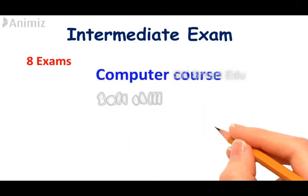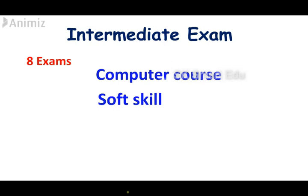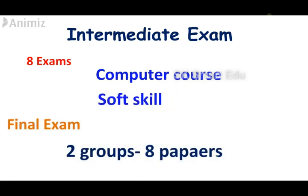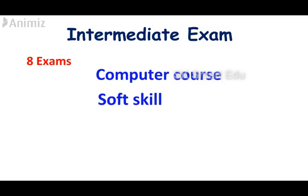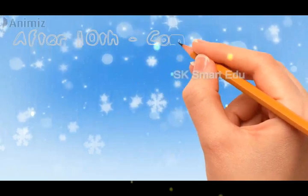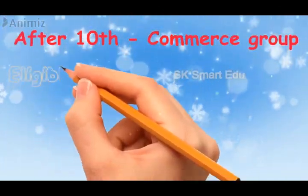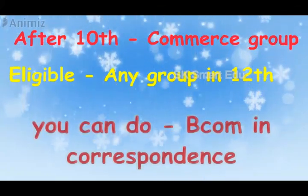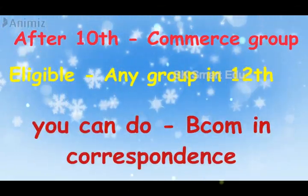For the Intermediate level, you will need articleship training for 2 and a half years as a criterion before the Final exam. For the CMA articleship training, it is 3 years. After that, you will have 6 months of additional training. Comparing the duration, it comes to approximately 4.5 years plus 3 years.